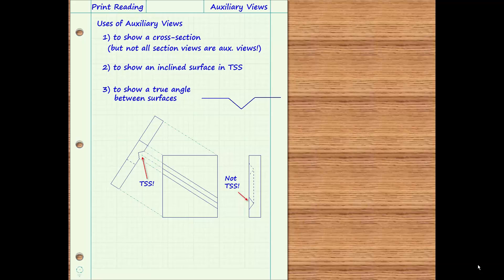Last, and in general, auxiliary views may be used to provide any detail or information that is difficult or even impossible to show using only the six principal views.